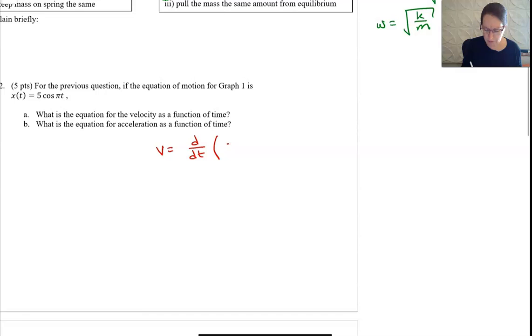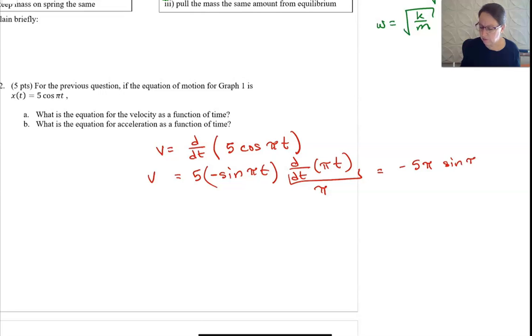The 5 comes out, so that's 5 times the derivative of cosine, which is minus sine of ωt. Then we take the derivative of what's on the inside, π times t, which gives you π. So this gives you minus 5π sine of πt.